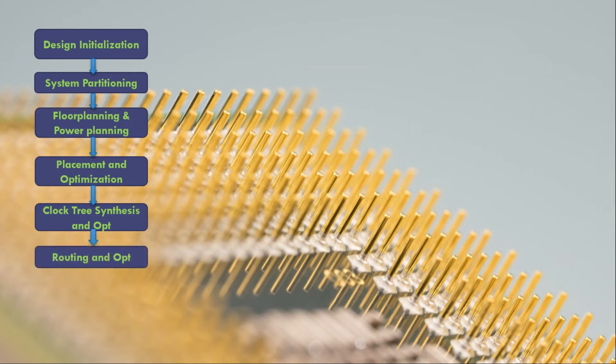The next step is basically the routing and optimization. This is the final step where the connection between the standard cells and the standard cells and the macros will happen. So the connections will happen at different metal layers. So if the tool is not able to do some connection, we need to make some space in order to completely route them.